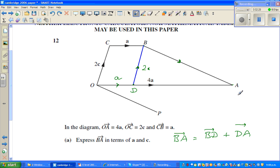Now OA, the vector OA is 4a, and this is a. So I hope you understand this would be, the magnitude of this vector from D to A would be 3a.